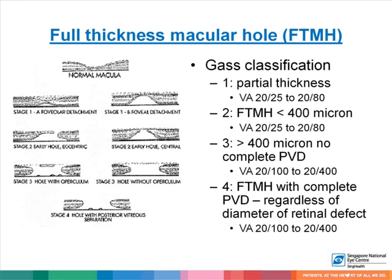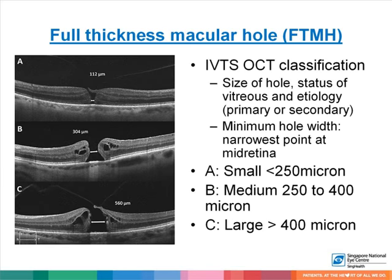Macular hole is classified according to the Gass classification. Grade 1 is partial thickness hole. Grade 2 is full thickness hole less than 400 microns in size. Grade 3 is 400 microns or more with no complete PVD. Grade 4 is a full thickness macular hole with complete PVD, regardless of the diameter of the retinal defect. The OCT staging is via the IBTS OCT classification, which uses size, status of the vitreous, and etiology of the hole.